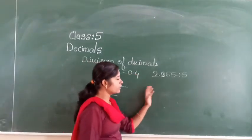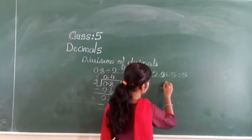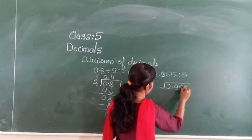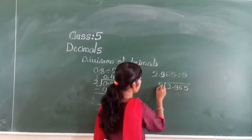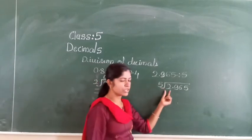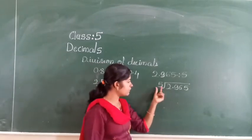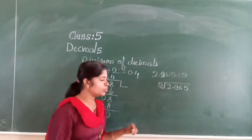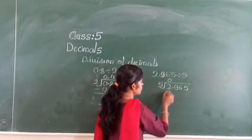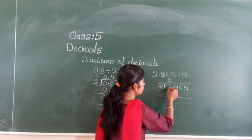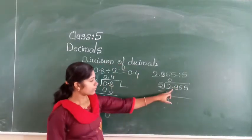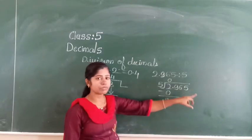Let us take one more example. See here: 2.965 divided by 5. First we need to take 1 digit. In the 5 times table, 2 is not there. So 5 zeros are 0. Next, 2 minus 0 is 2. The digits after the decimal point are there, so you need to give a point here. Next you have to take here 9.